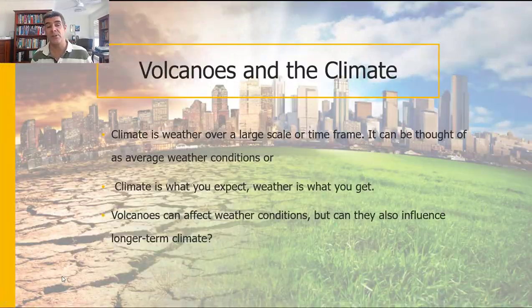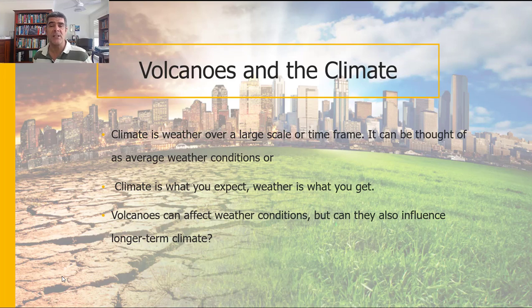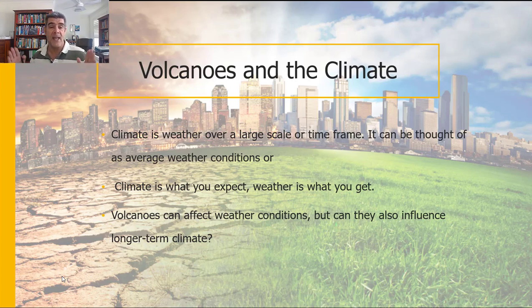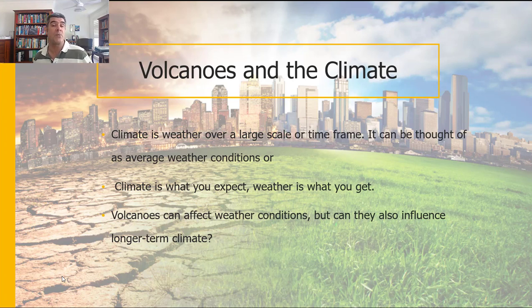The first thing we need to do is be really clear about what climate is and how volcanic activity can potentially change what's going on in the climate. A lot of people use the terms climate and weather synonymously, but they're not synonyms. Weather tends to be a short time frame and climate a long time frame — basically climate is the weather over a larger scale, often described as average weather conditions. Climate is what you expect and weather is what you get.